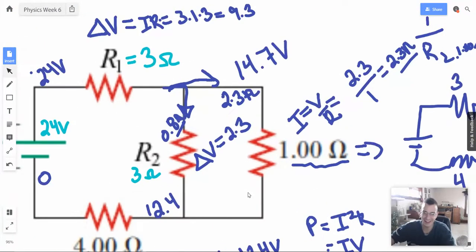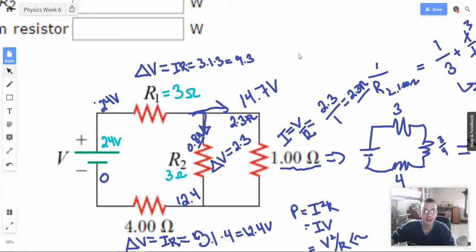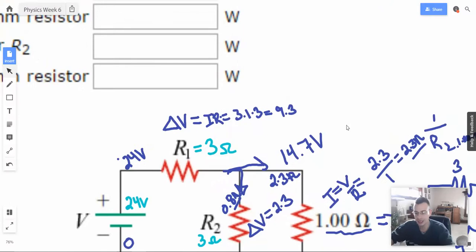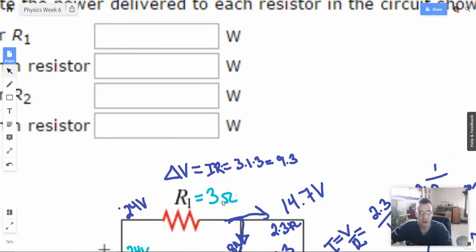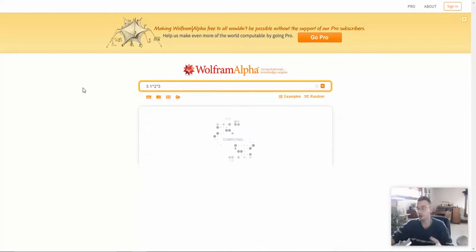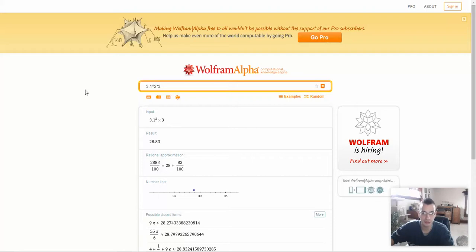Alright. There's probably... That's terrible. Alright. Power equals I squared R. So I'm going to start with R1. And hopefully my work isn't so messy that I lose it all. So I squared R is going to be 3.1 squared times 3. 3.1 squared times 3. Got it. So 3.1 squared times 3. Now you can also use I times V or V squared over R. 28.83.